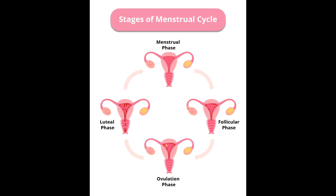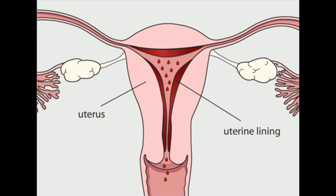Once the egg is released, it will survive up to 24 hours. If sperm reaches the egg during that time, the female gets pregnant. Number 4: the luteal phase.